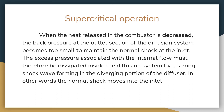For example, when an aircraft has a design condition between Mach 4 and Mach 6, during heavy combat conditions it may operate above the design condition, such as above Mach 7. In those cases the heat release in the combustion chamber is greatly decreased, and the back pressure at the outlet section of the diffusion system becomes too small to maintain the shock wave at the inlet. The excess pressure must therefore be dissipated inside the diffusion system by a strong shock wave forming in the diverging portion of the diffuser — in other words, the normal shock moves into the inlet.